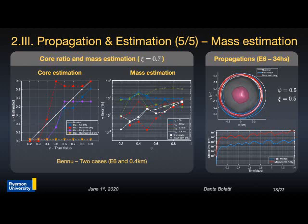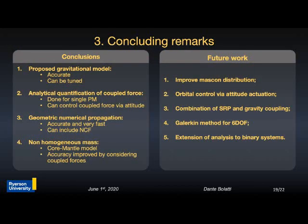This analysis allows obtaining the model parameters and concludes the main body of research. During this research, a novel gravitational field model was proposed that is accurate, tunable, and captures orbit-attitude coupling effects. The analytical quantification of the coupled force for a single point mass was derived, showing the coupled force can be controlled via attitude. Geometric numerical propagation methods based on the Galerkin approach were presented that are accurate, fast, and accommodate non-conservative forces. Finally, the non-homogeneous mass estimation problem was addressed using a core and mantle asteroid model, with incorporating the coupled force terms shown to improve estimation accuracy.